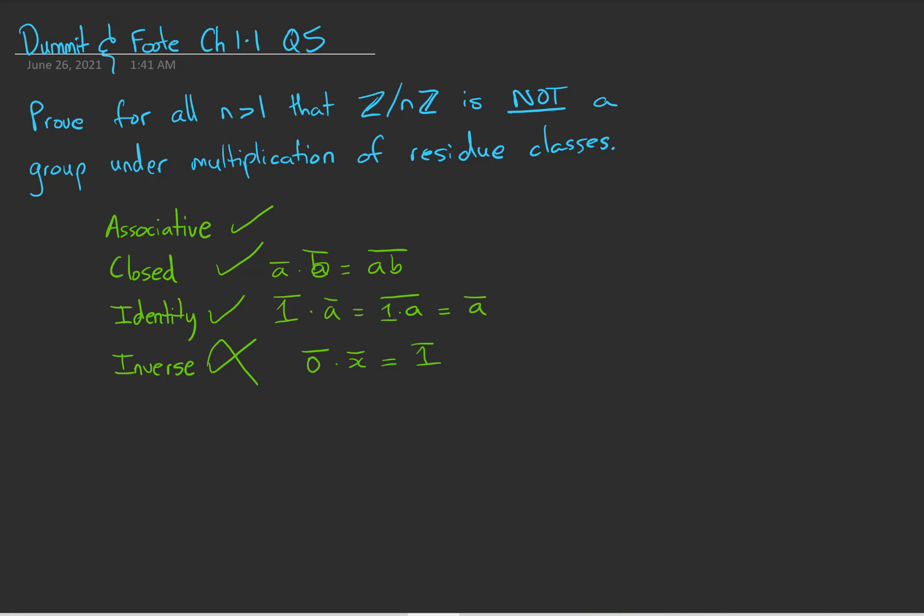So the congruence class of 0 is in the set of residue classes modulo n for all n. And under multiplication,